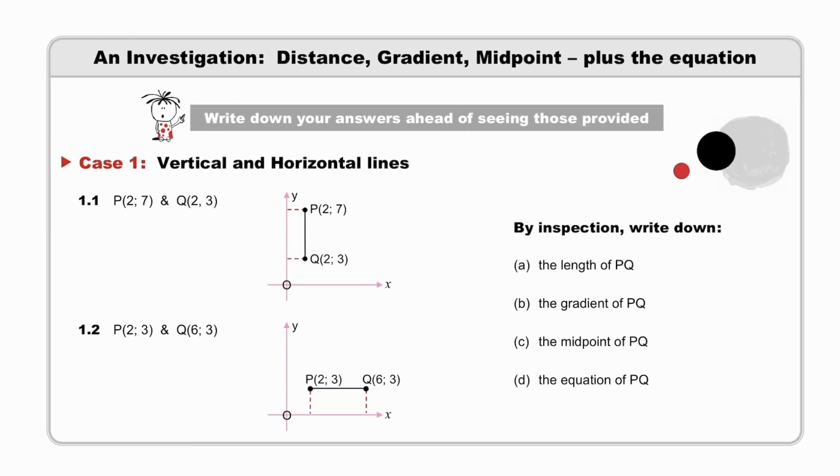Learn when formulae are needed or not. Let's do an investigation where we highlight three cases of straight line graphs: vertical and horizontal lines, lines through the origin, and lines through any two given points. In each case, we will determine the distance, the gradient, the midpoint, and also the equation.